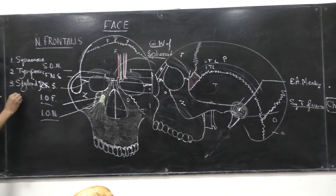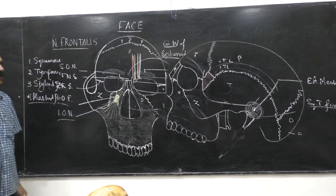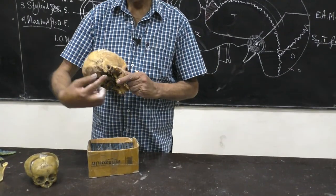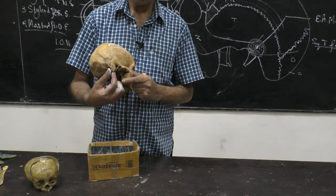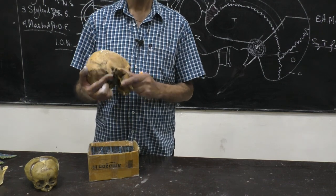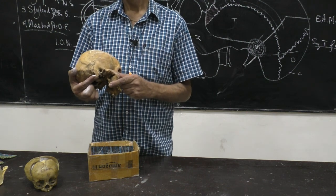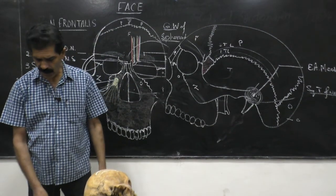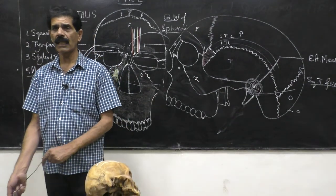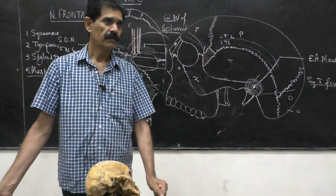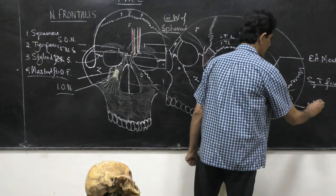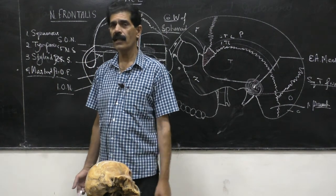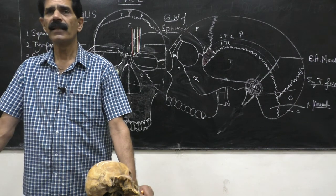The fourth part is called the mastoid part — the posterior lower part of the temporal bone, pointed forward and downward. It is called mastoid because it resembles the nipple of the female breast. The mastoid process is an example of a pneumatic bone, meaning air is trapped during the development of this bone.